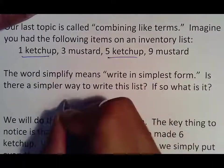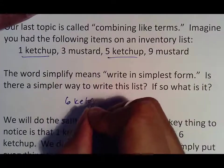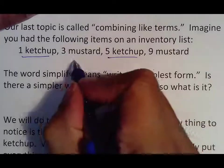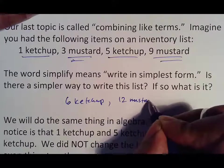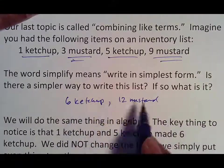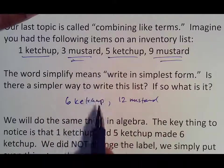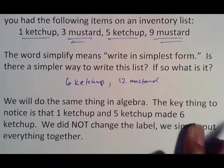Well, obviously, you shouldn't have 4 things on here when you have ketchup and ketchup there. So what I'll do is say 1 ketchup and 5 ketchup make 6 ketchup, comma. And since I have 3 mustards and 9 mustards, 3 and 9 make 12, so 12 mustards. And so that would be the simplest way to write it, which is to put my ketchups together, put my mustards together, and go from there.